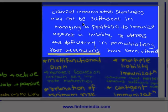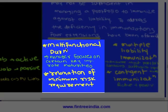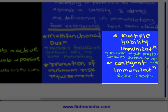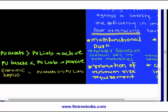Extensions to classical immunization are needed because classical immunization only takes care of a one-time change in interest rates. The extensions are: multifunctional duration — matching duration at key maturities in addition to classical immunization; multiple liability immunization — building separate immunized portfolios for each cash flow; relaxation of minimum risk requirement — increasing portfolio risk within acceptable limits; and contingent immunization — a mix of active and passive. If present value of assets exceeds liabilities, you follow active management; if less, you follow passive.